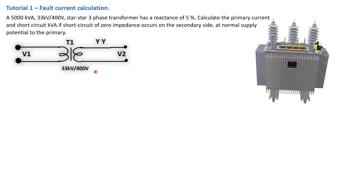When a short circuit occurs, the transformer will try to deliver as much power as available, because the short circuit is demanding everything. The amount of current that will flow on the primary depends on what's happening on the secondary. If the short circuit is requesting 10,000 amps and the transformer can't supply that, then that maximum is what will flow. You need to protect your circuit against those events.